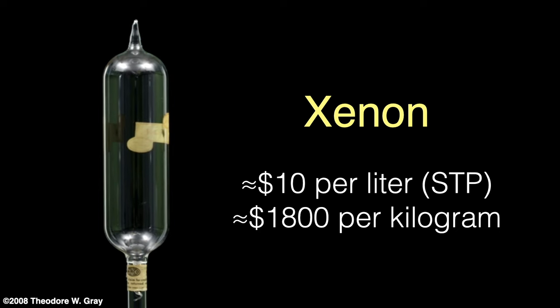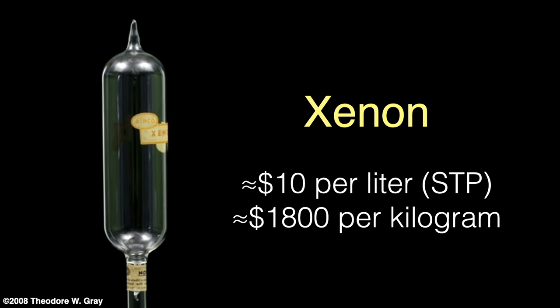50 to 60 metric tons are produced annually. It's estimated that there is about 2 billion metric tons of xenon in the atmosphere, but it's still one of the rarest elements on Earth.